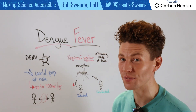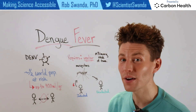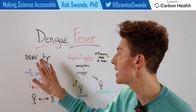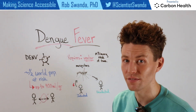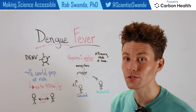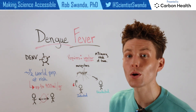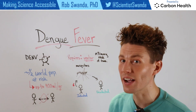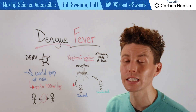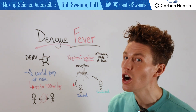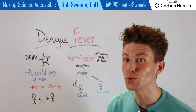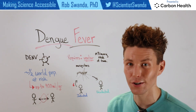Dengue, or dengue fever, is a viral infection that is caused by the dengue virus. Its main mode of transmission requires a vector, and that vector has actually been expanding its population over the past several decades due to changes in our climate.